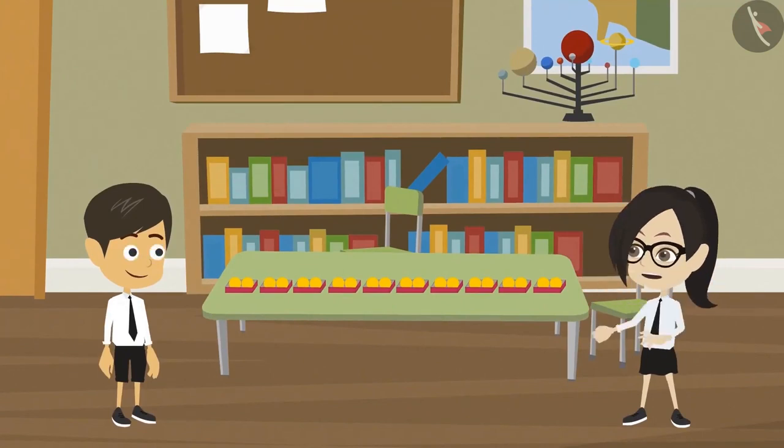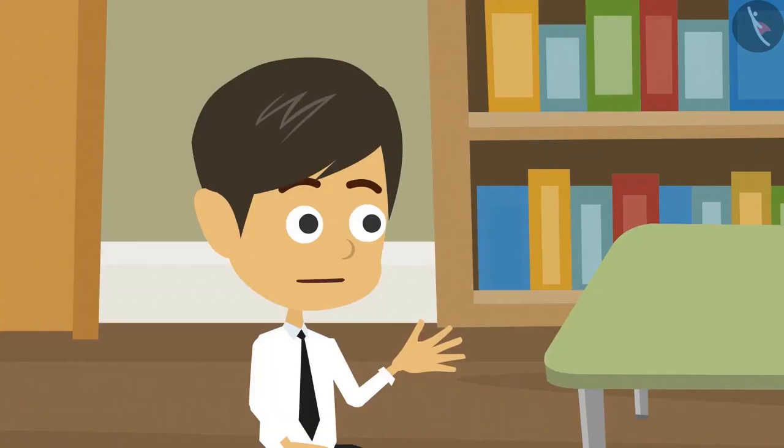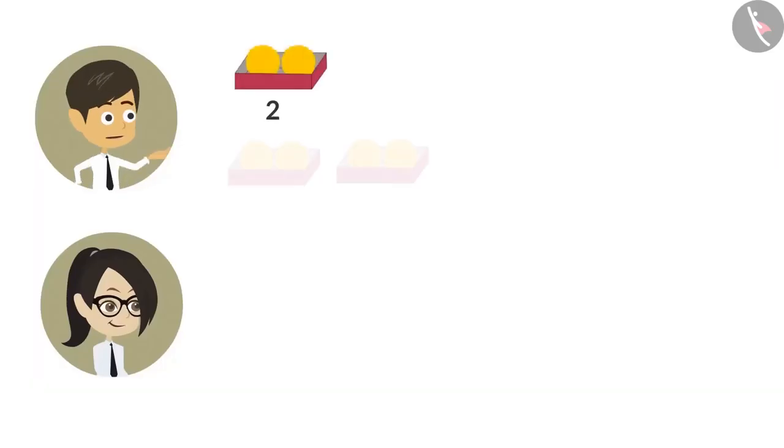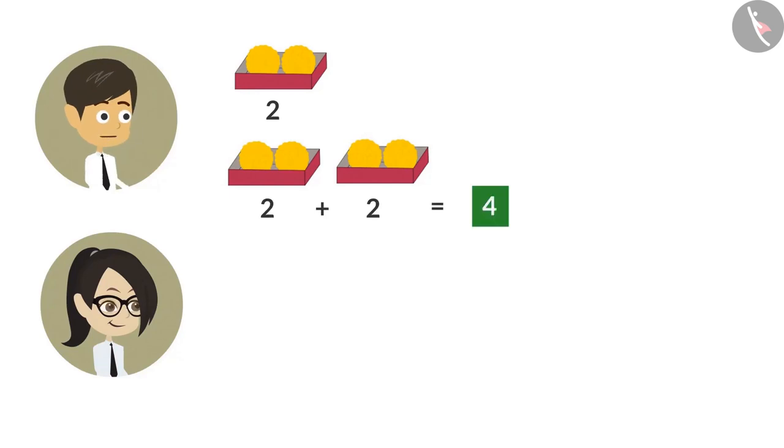So let's count the laddus in the boxes. Each box has two laddus. To know the laddus in two boxes, we have to add two, two times. So the answer is four. Which means there are four laddus in two boxes.